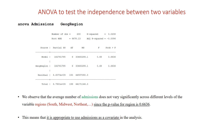Therefore, in STATA, you will first simply use the command ANOVA, then place admissions first because we treat this as the independent variable, and geographical region as our second variable in the command line because that's the main independent variable. Once you run the analysis in STATA, we observe that the average number of admissions does not vary significantly across different levels of the variable regions. The p-value for that is 0.6636, which means that admissions is independent of geographic region. Therefore, it is appropriate to use admissions as a covariate in the analysis.